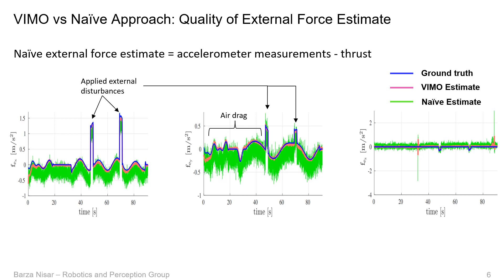To evaluate the quality of WEMO's external force estimates, we compare them against the estimates from a naive approach and the ground truth. The three plots show WEMO's force estimates in body x, y, and z-axis respectively against the naive estimates, which were computed by simply subtracting the mass-normalized thrust from the accelerometer measurements. From the plots, it is evident that the naive estimate needs additional filtering and bias removal steps, whereas our estimator implicitly takes into account the noise characteristics and the bias of the IMU, the noise in the state estimates, and the noise of the commanded thrust. Therefore, our estimate lies closer to the ground truth.